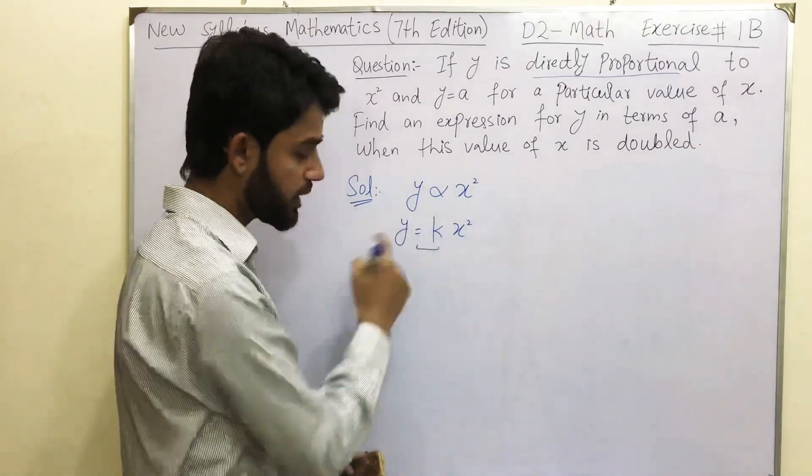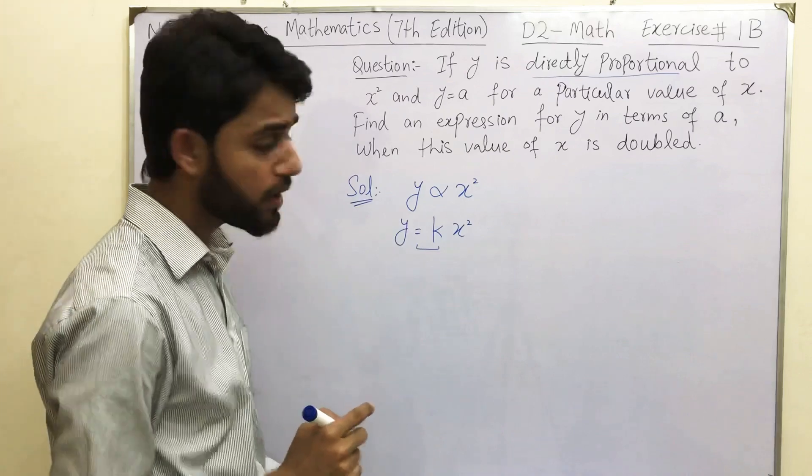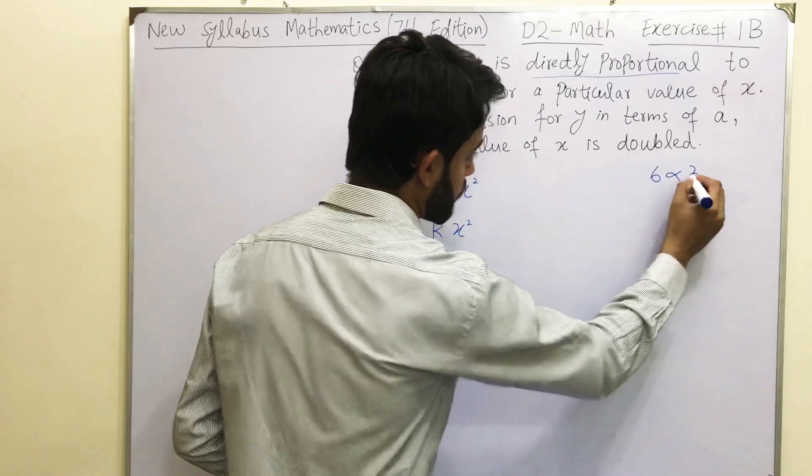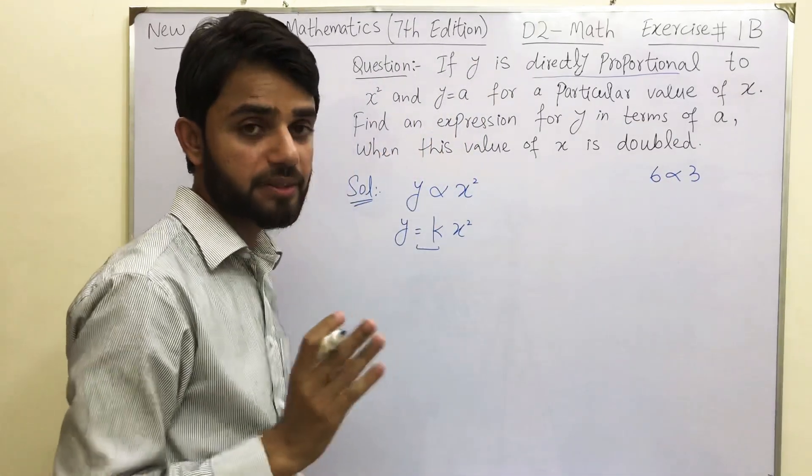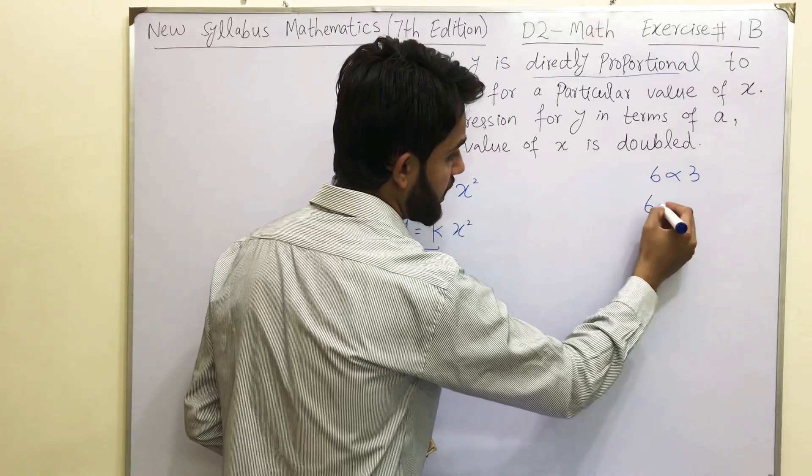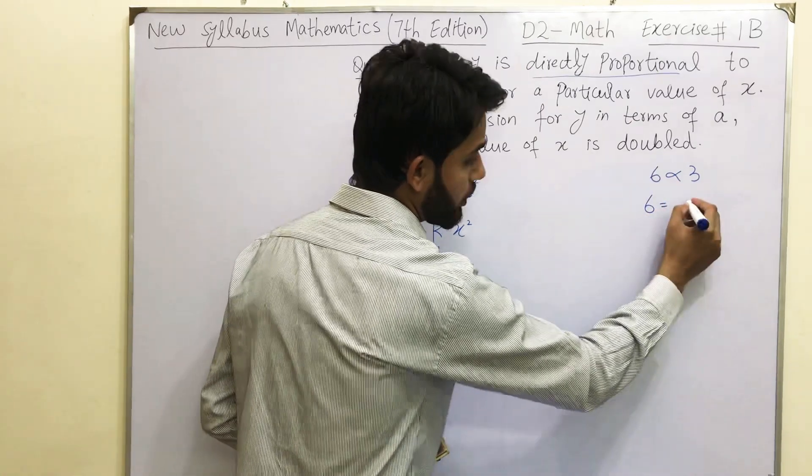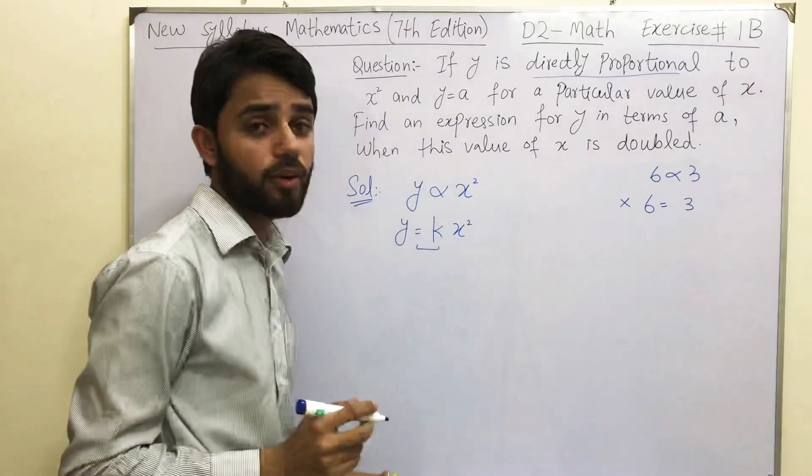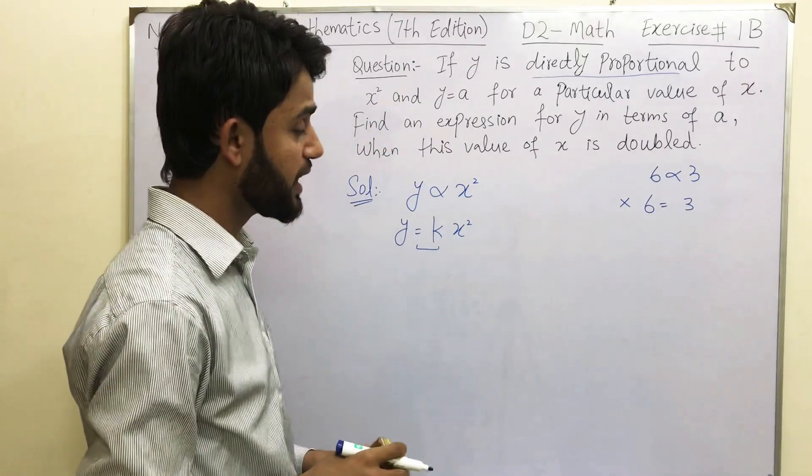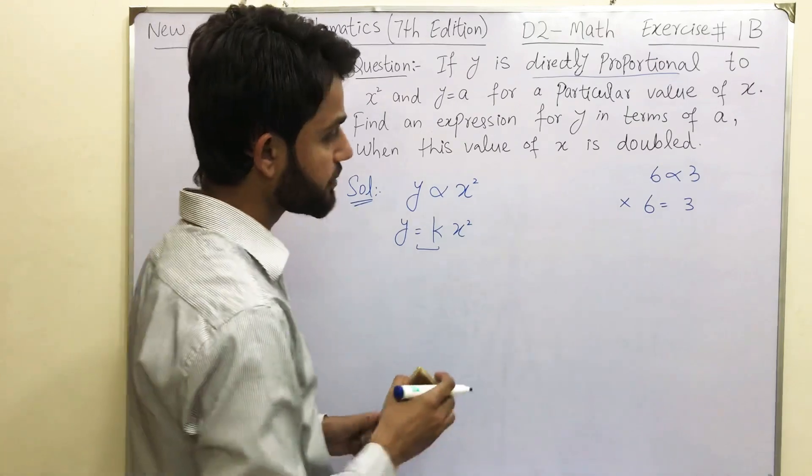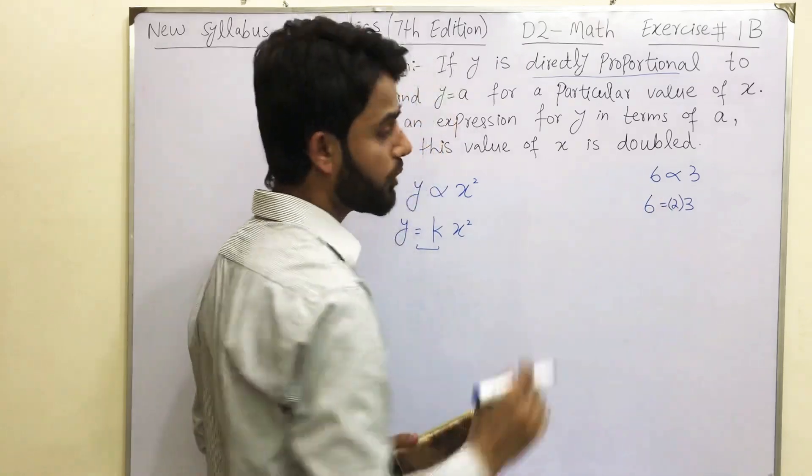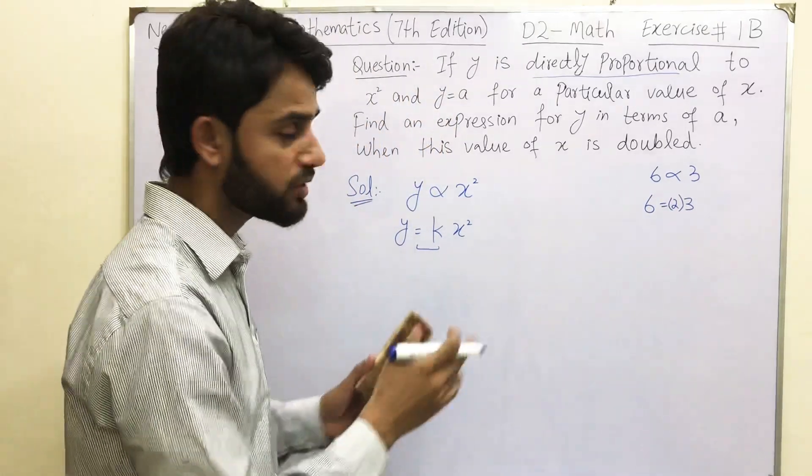And the reason is that why we are taking because if we write 6 is directly proportional to 3, so far this is completely true. And if we remove this directly proportional sign and we only write equals, you see it means that how it is possible that 6 is going to be equal to 3. So this is never possible. So it means that we must need to introduce a scalar over here to maintain the balance on both sides.